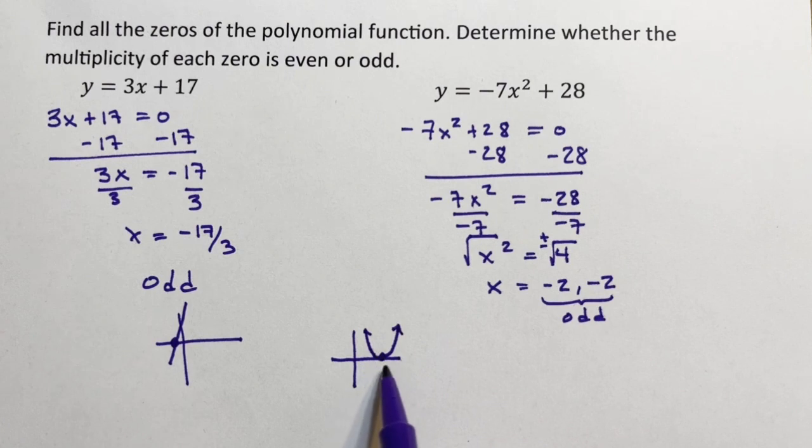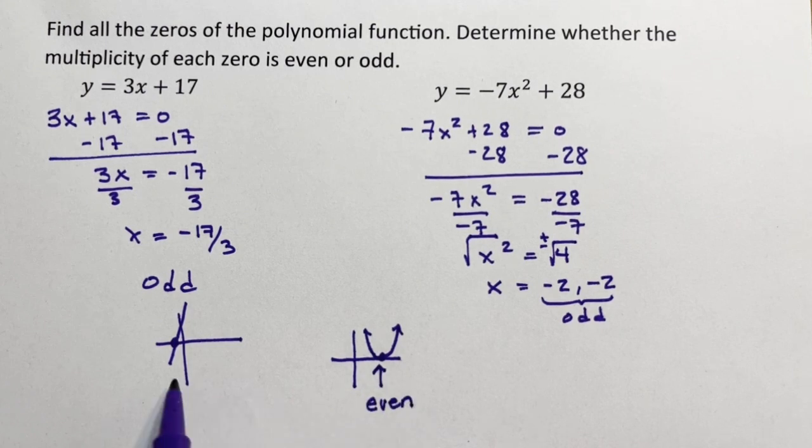So, this, if we had an equation with this formation, this would be an even multiplicity, where this is odd.